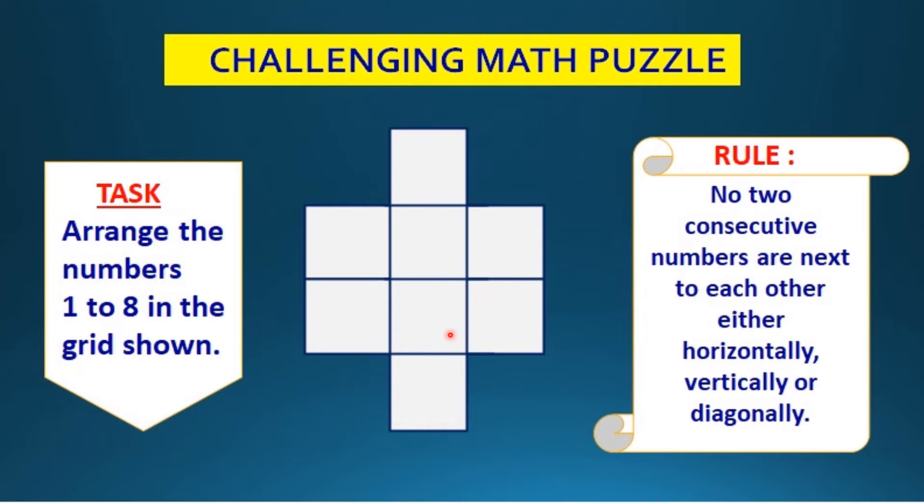The rule is that no two consecutive numbers should be next to each other, placed horizontally, vertically, or diagonally to each other. All the numbers 1 to 8 should be placed based on this rule. Let's see how to solve this puzzle.